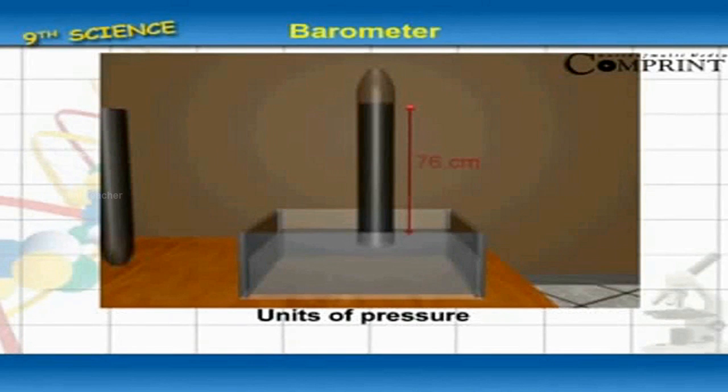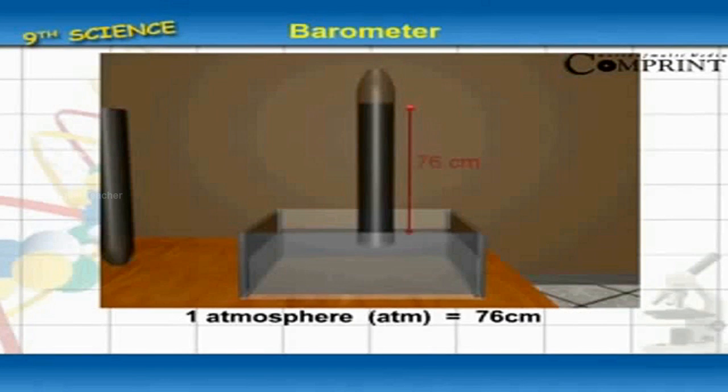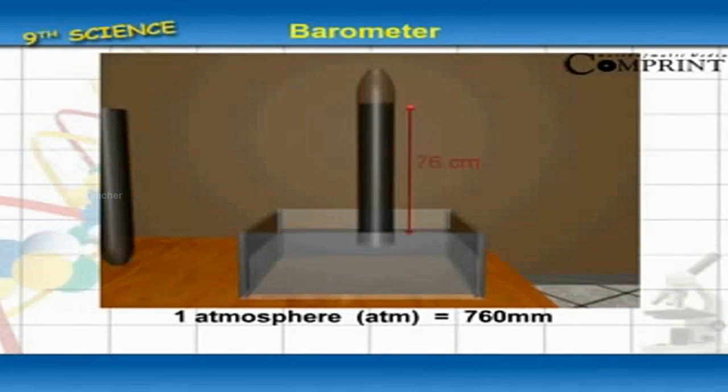Units of pressure: 1 atmosphere is equal to 76 cm. 1 atmosphere is equal to 760 mm.